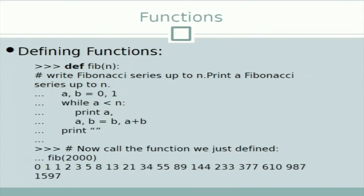Functions are defined with the keyword 'def' followed by the function name. Here we have defined a function 'fib(n)' which writes a Fibonacci series up to n. We initialize 'a, b = 0, 1' then loop while 'a < n' and print 'a'. In each loop 'a' is assigned 'b' and 'b' is assigned 'a + b'. If we call 'fib(2000)' it will start from 0 and print the Fibonacci series.